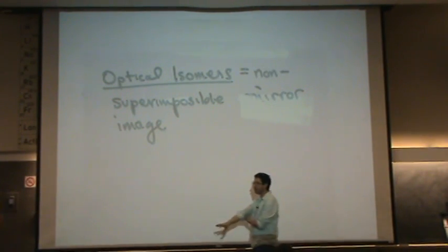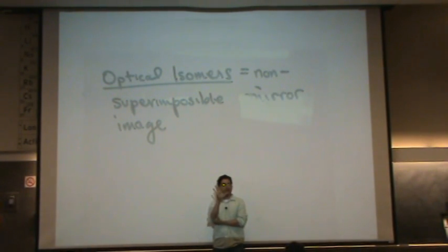What does that mean? Take a look at your hand, your right hand and your left hand. They are mirror images of each other, but they are not what's called superimposable. You can't take your right hand and impose it on your left. There's no way. You could do this, but you've got your palms on the wrong sides.